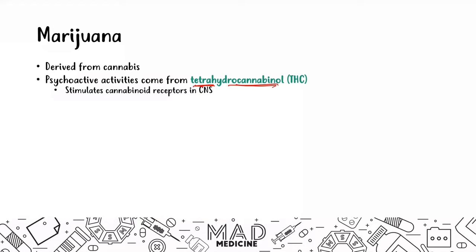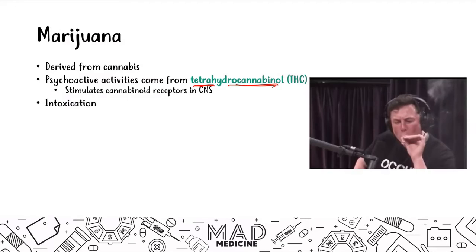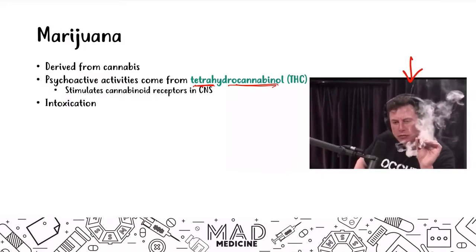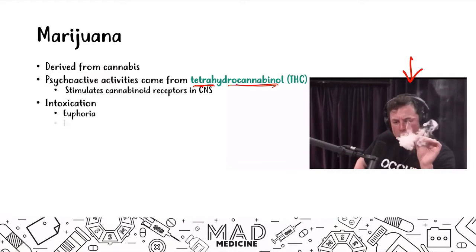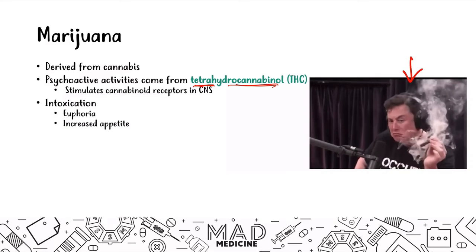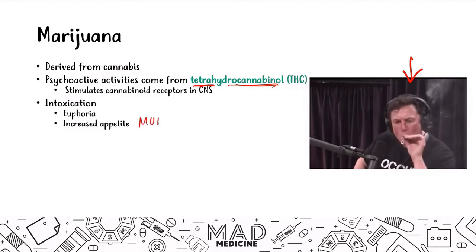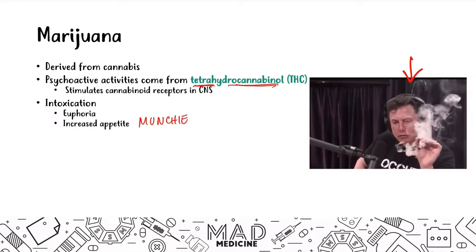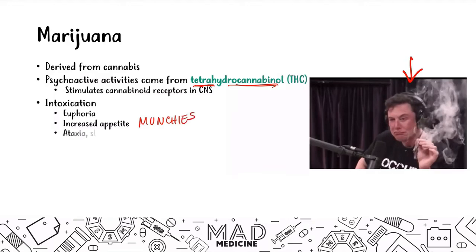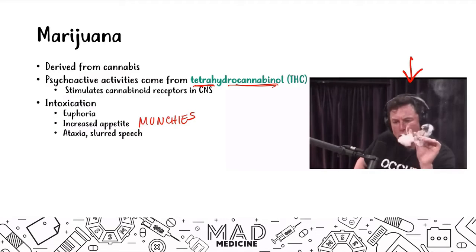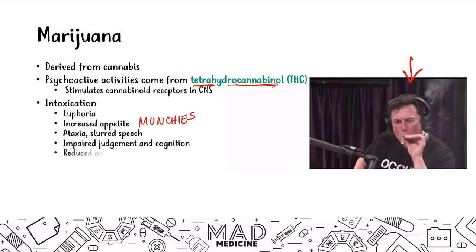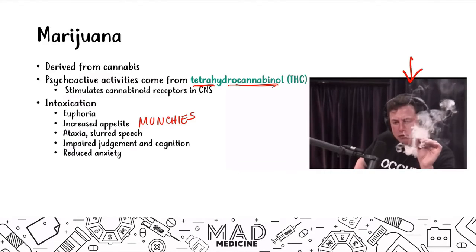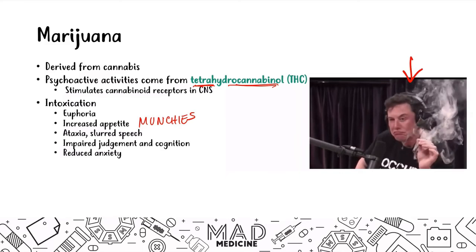When it comes to marijuana intoxication, effects include euphoria, increased hunger — the munchies — ataxia, and slurred speech. Patients will also have impaired judgment and cognition, as well as reduced anxiety. In fact, a lot of people use it off-label for anxiety.